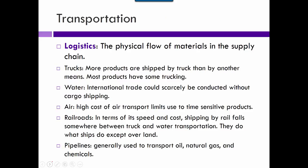Transportation is also part of the supply chain. Logistics is the flow of materials and it's becoming more and more data-driven to be more efficient. Almost everything has to come by truck at some point. Water is big for international shipping — it's the cheapest way to get things internationally. Air is used for time-sensitive international shipments but is very expensive. Railroads fall somewhere in between — cheaper than air but not quite as fast. Pipelines are used for natural gases and chemicals. Water is cheapest and air is the most expensive.